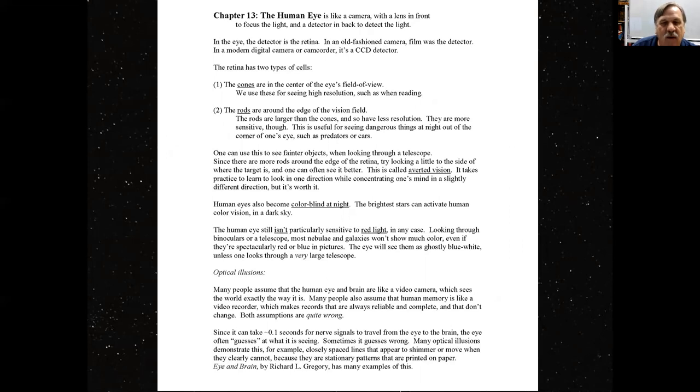Human eyes become colorblind in the dark. The brightest stars can activate human color vision in a dark sky. You go up to the mountains and you can see all kinds of color in bright stars. But here down in Fresno in the city, with all the city lights, all that gets pretty much washed out. The human eye still isn't particularly sensitive to red light in any case. Looking through binoculars or a telescope, most galaxies won't show much color, even if they're spectacularly red or blue in pictures. The eye will see them as ghostly bluish white, unless one looks through a very large telescope capable of delivering enough light to your eye to activate your color vision.